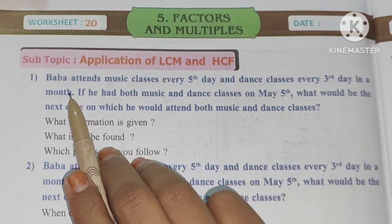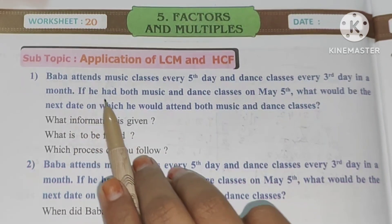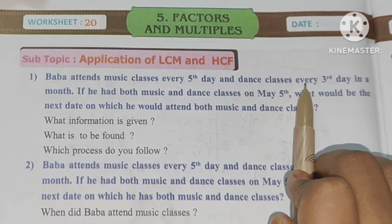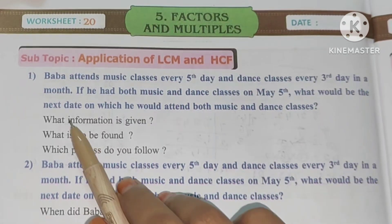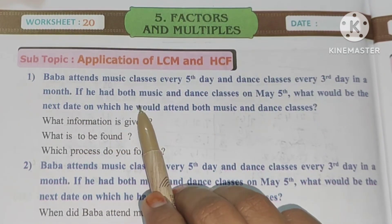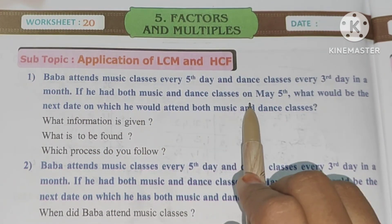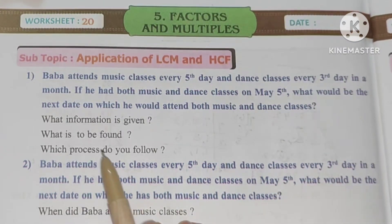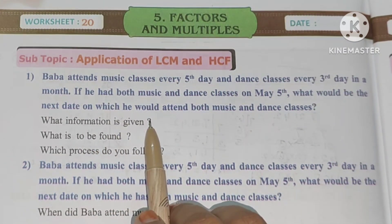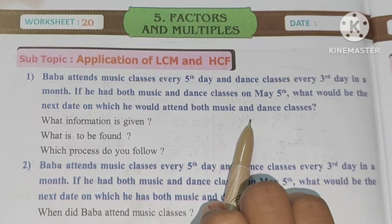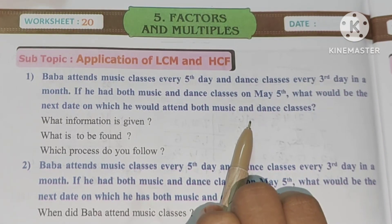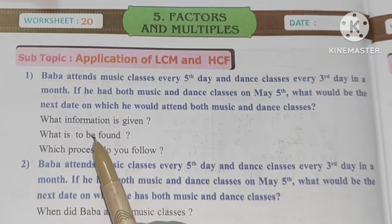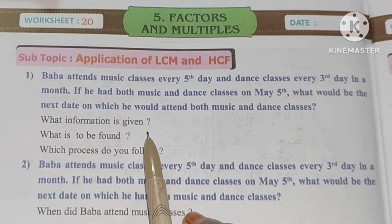First question: Baba attends music classes every fifth day and dance classes every third day in a month. If he had both music and dance classes on May 5th, what would be the next date on which he would attend both music and dance classes?